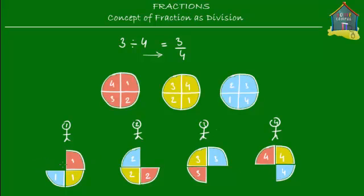So what do we have? We had 3 pizzas and divided each pizza among the 4 friends. Each of the friends got 3 slices: friend number 1 got 3 slices, friend number 2 got 3 slices, friend number 3 got 3 slices, and so did friend number 4. But what fraction of the pizza is that? If each pizza is divided into 4 slices and you got 3 slices, then the fraction you got was 3 out of 4 — that's 3 fourths or 3 quarters, exactly what is shown here.